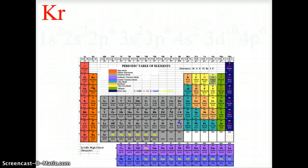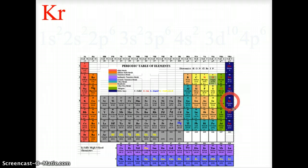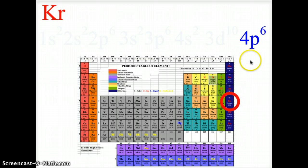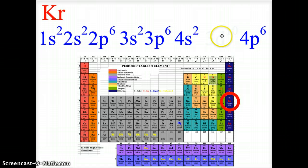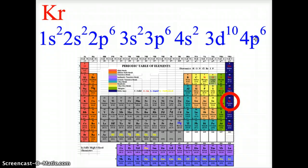Now let's do krypton — go ahead and pause and write it out. Krypton is a noble gas in the fourth energy level, P block, sixth column, so it ends at 4p6. Before that: 1s2, 2s2, 2p6, 3s2, 3p6, 4s2, 3d10, then 4p6. All noble gases end as p6, because their outermost orbital is completely filled — 2 plus 6 gives 8, making them stable.